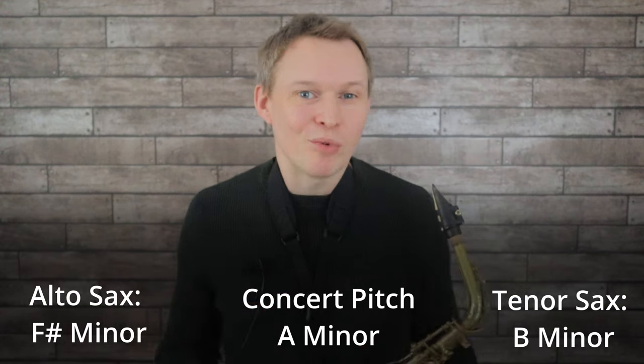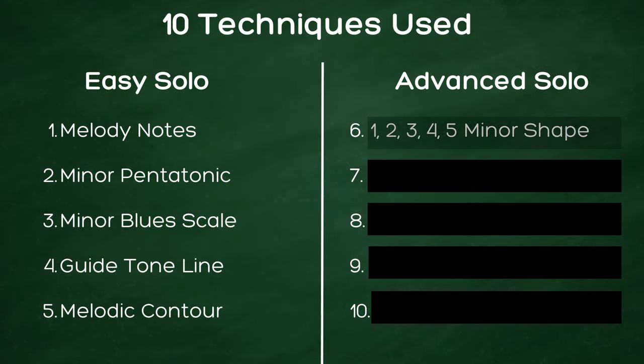Moving on to the more advanced version, what we're going to be doing now is putting this song back into the original key. For our new technique, similar to the first technique in the beginner version, what we're going to be doing is creating our phrases from the first five notes of the minor scale.